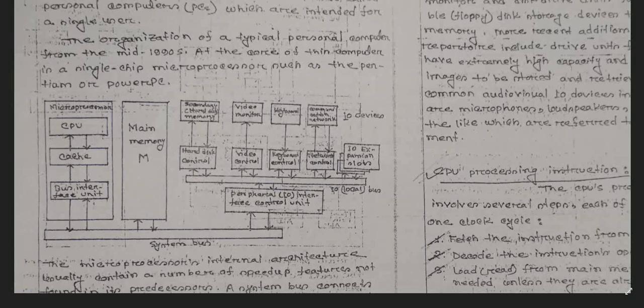The bus interface unit is connected directly with the system bus. The main memory, which is the ROM section, is also connected with the system bus. Cache memory is the RAM section, which is why cache memory is always closer to the CPU. The system bus is connected with the I/O interface, and the I/O interface is connected with all other input/output devices.